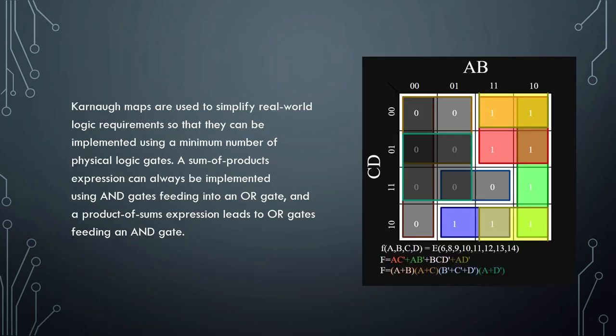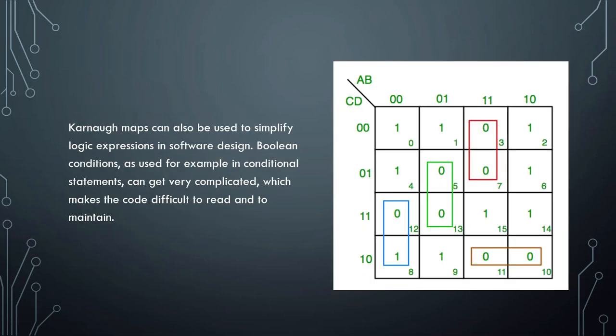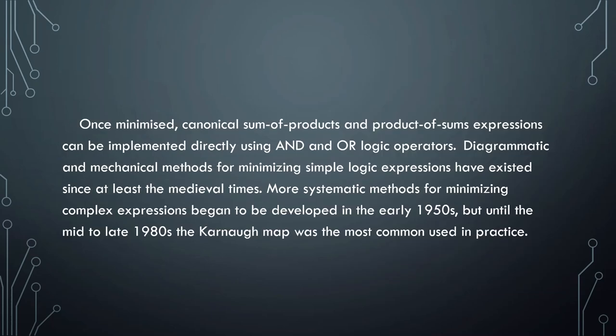Corner maps are used to simplify real-world logic requirements so that they can be implemented using a minimum number of physical logic gates. A sum of products expression can always be implemented using AND gates feeding into an OR gate, and a product of sums expression leads to OR gates feeding an AND gate. Corner maps can also be used to simplify logic expressions in software design. Boolean conditions, as used for example in conditional statements, can get very complicated, which makes the code difficult to read and to maintain. Once minimized, credential sum of products and product of sums expressions can be implemented directly using AND and OR logic operators.